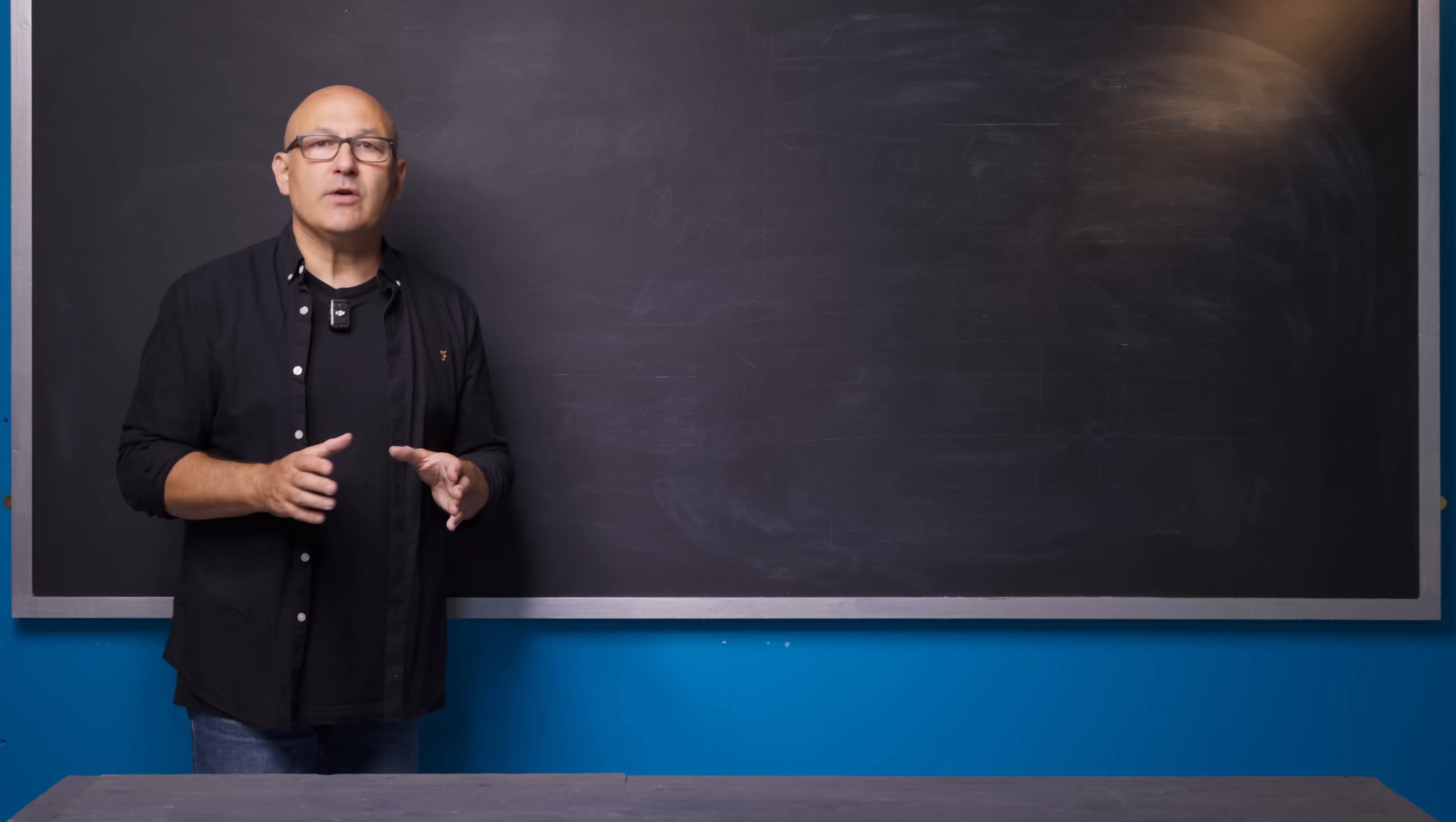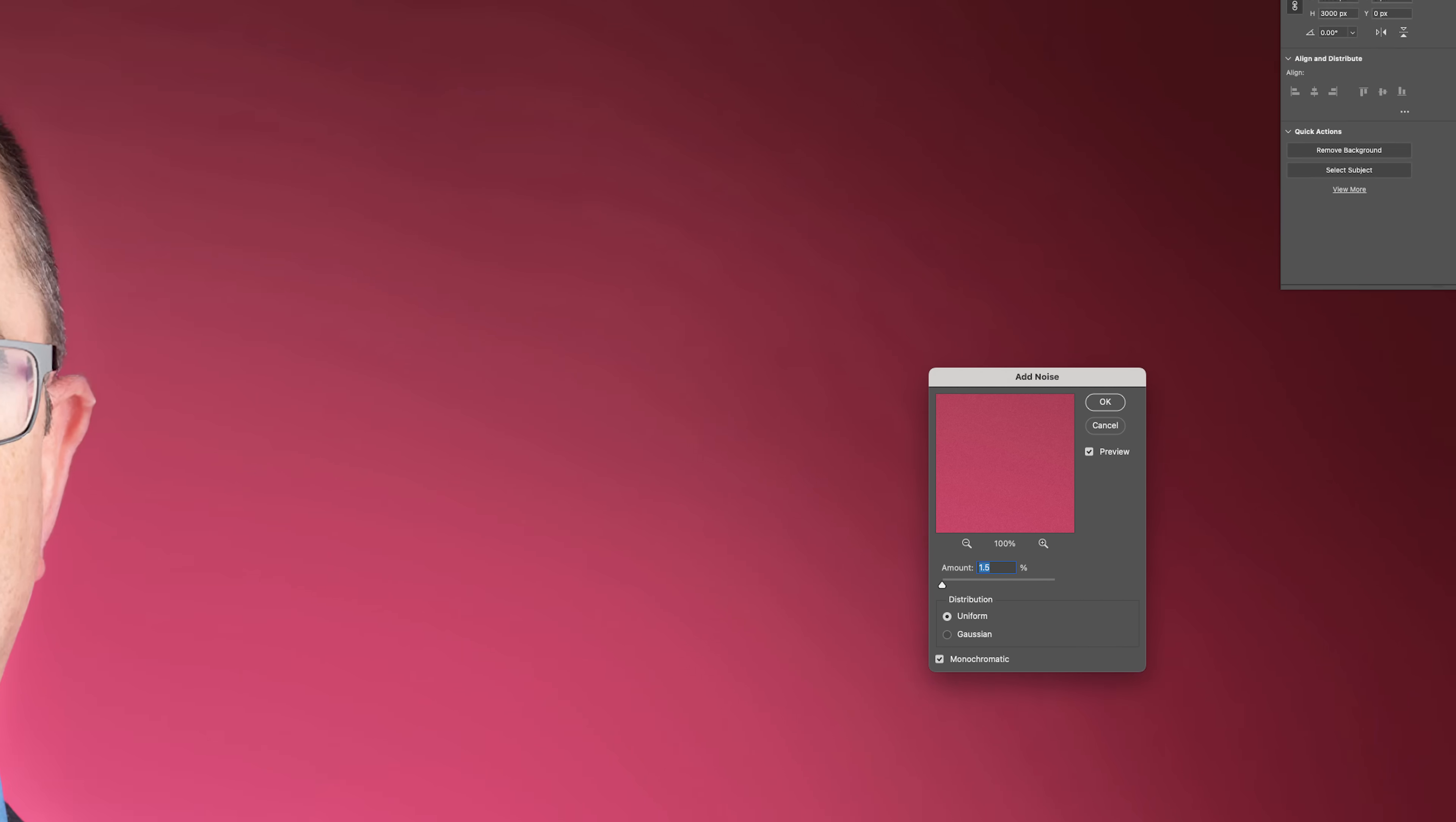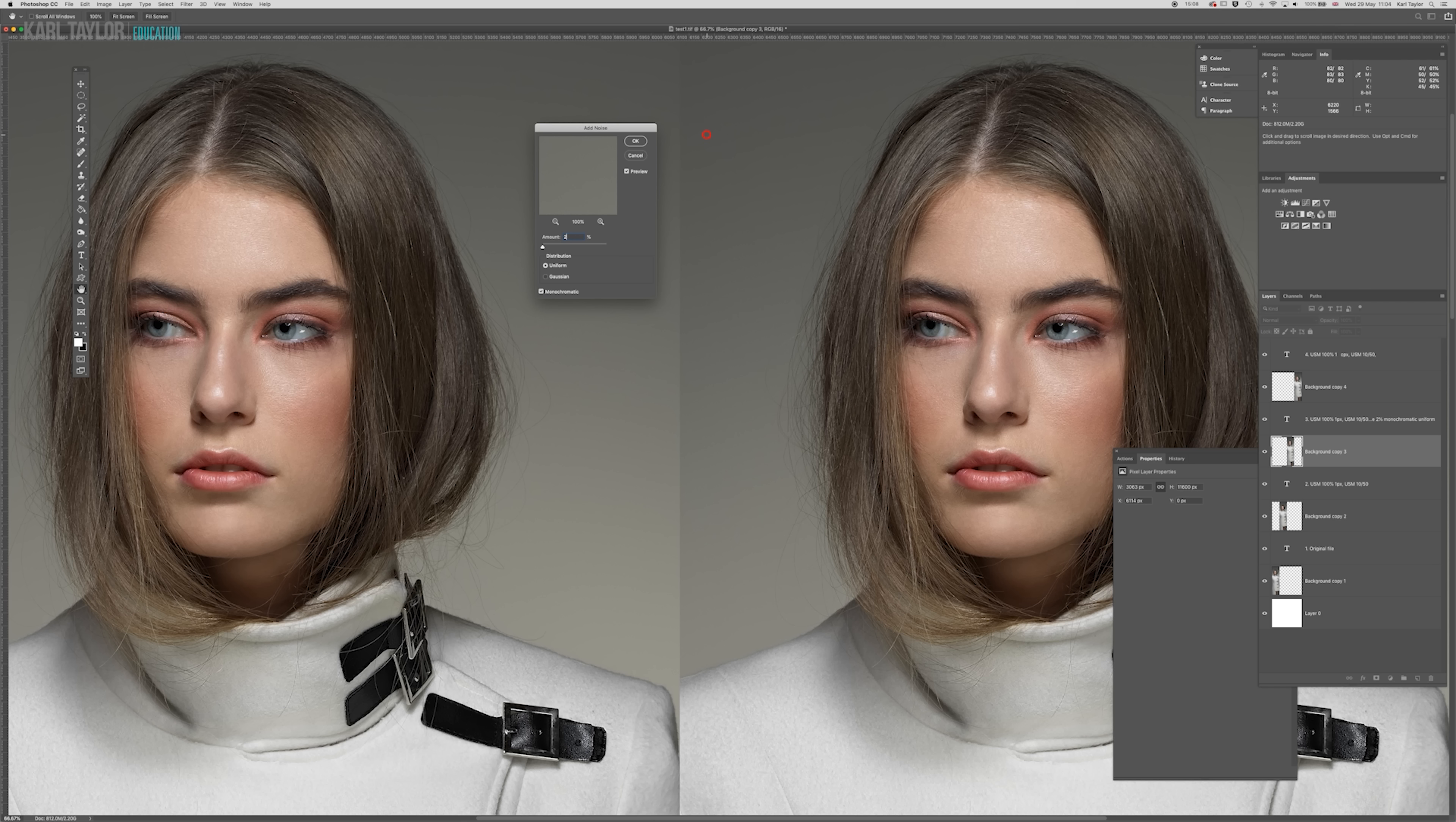But it's interesting to note that not all noise is actually bad. Certain levels of uniform monochromatic noise can be used to eliminate banding in gradating tones, such as backgrounds. And noise can be deliberately added to images, especially for printing. That can actually increase perceptual sharpness.